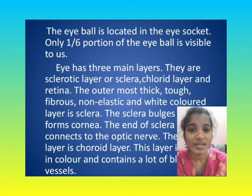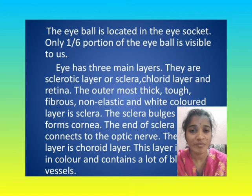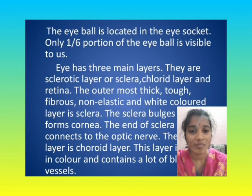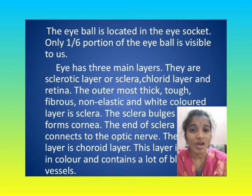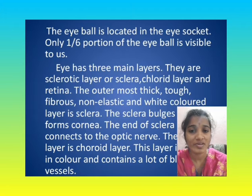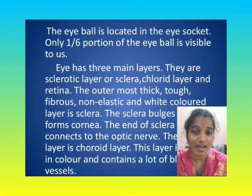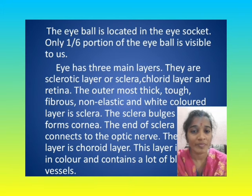The eyeball is located in the eye socket. Only one-sixth portion of the eyeball is visible to us. The eye has three main layers: the sclerotic layer or sclera, the choroid layer, and the retina. The outermost thick, tough, fibrous, non-elastic, and white-colored layer is the sclera or sclerotic layer. The sclera bulges and forms the cornea, and the end of the sclera connects to the optic nerve.